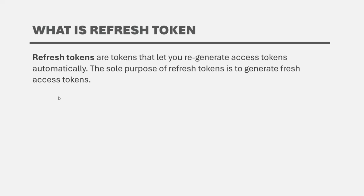There are three points to remember about refresh tokens. First, refresh tokens are also JSON web tokens, meaning they are generated in the same way as the access token. Second, refresh tokens have a smaller payload than the access token. Third, refresh tokens have a higher expiration time. When we create a refresh token, we specify less payload and set a higher expiration time so that before the access token expires, we can use the refresh token to generate a new access token. The only purpose of the refresh token is to generate fresh access tokens, and it is recommended to keep different payloads for access and refresh tokens so they cannot be used interchangeably.